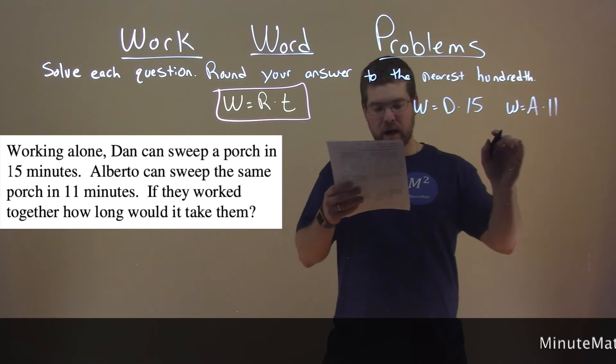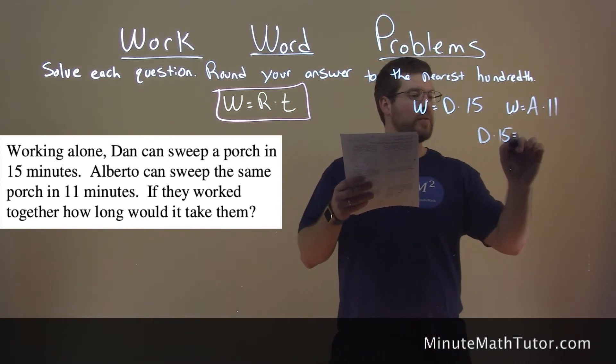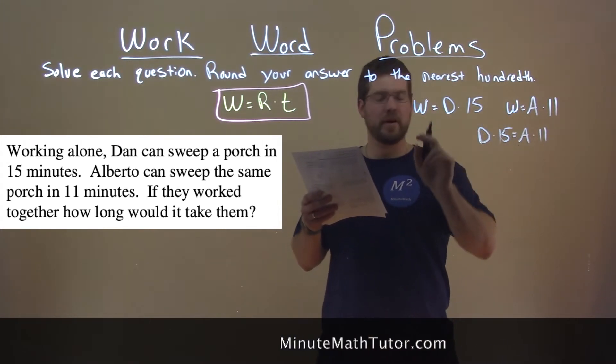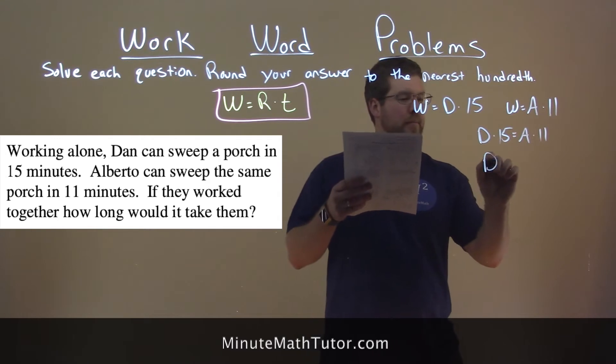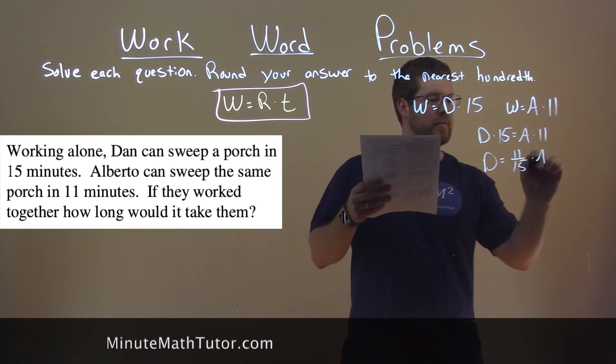Well, combine them together, we know that Dan times 15 equals Alberto times 11. You basically set them equal because they both are equal to W. And D by itself is 11 over 15 times A.